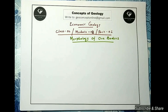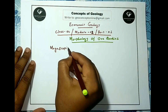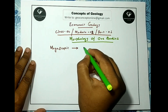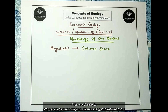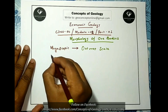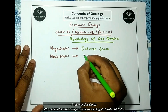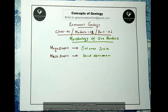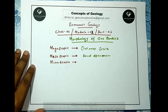Megascopic means on field or outcrop scale — when we see a rock on outcrop scale, we call it a megascopic observation. When we are observing a rock in hand specimen, it is called mesoscopic observation — mesoscopic means on hand specimen scale. When we prepare a polished or thin section and observe the rock under a microscope, this is called microscopic observation.